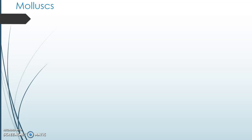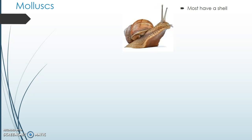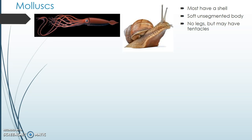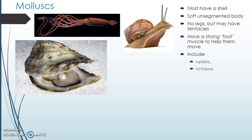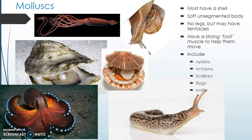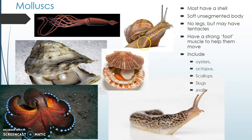Let's move on to a group called mollusks. These guys live both on the land and in the water. Most of them will have a shell — you can see the shell on the back of this snail. They have a soft unsegmented body — you probably know that from stepping on snails and slugs after they come out in the rain — and no legs, but they can have tentacles, like this giant Pacific squid. Even though they don't have legs, they have a strong foot which is a special muscle that helps them move, whether slithering on land or swimming through the ocean. They include oysters which make pearls, octopuses or octopi, scallops, slugs, and of course snails. Most of them are quite yummy — though I would not eat a slug. Yuck.